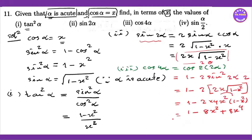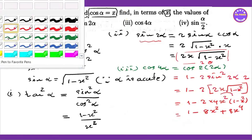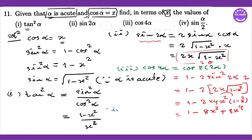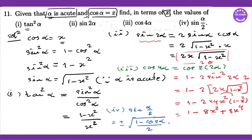For sin alpha over 2, use formula number 4. The formula is: sin(alpha/2) equals plus or minus square root of (1 minus cos alpha) divided by 2. Substituting cos alpha equals x, we get plus or minus square root of (1 minus x) divided by 2.